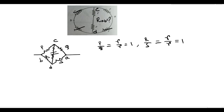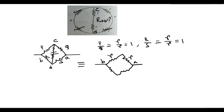So the current does not flow through this branch. The equivalent circuit has small r and small r in series. These two points are B and A. The equivalent resistance of r and r in series is 2R. Similarly, this is again 2R, and also this R and R in series gives 2R again.